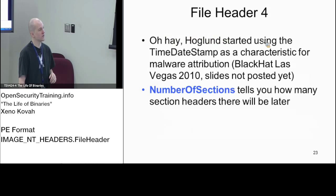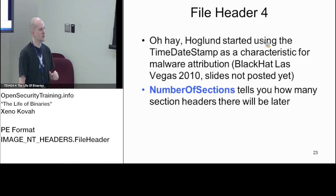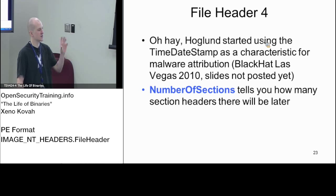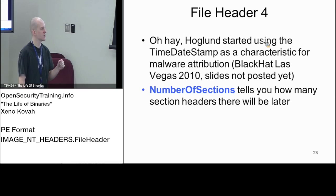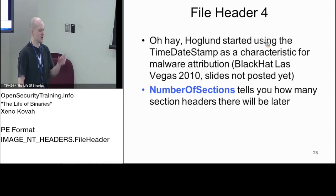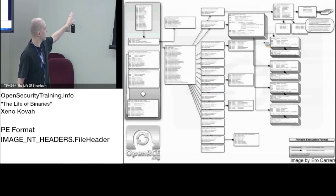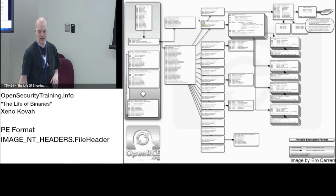We'll see PEView interpreting the time-date stamp later. The next thing we care about in the file header is number of sections. Later on there's going to be an array of section headers. Sections are things like .text that contain code. The number of sections field up here at the file header level tells the OS loader how many of those section headers there are, and they'll be found immediately following the optional header. That array of section headers is tacked right after the NT header.